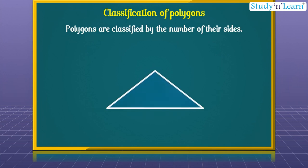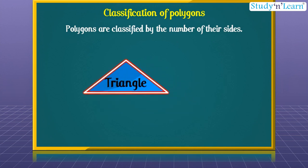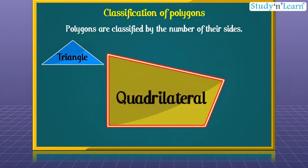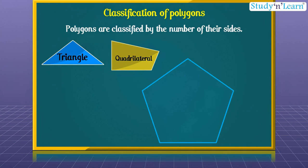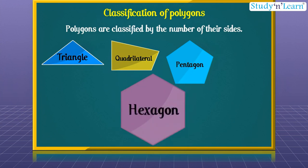A polygon with three sides is called a triangle. A polygon with four sides is called a quadrilateral. A polygon with five sides is called a pentagon. A polygon with six sides is called a hexagon.